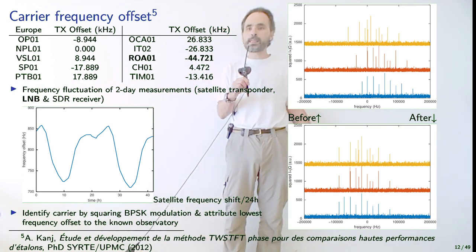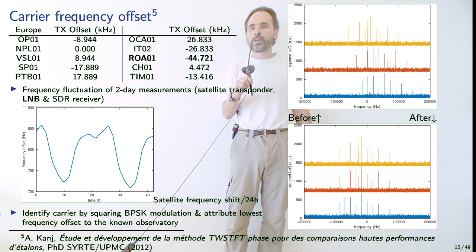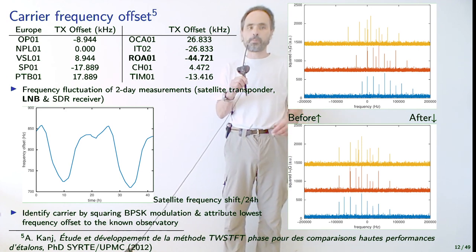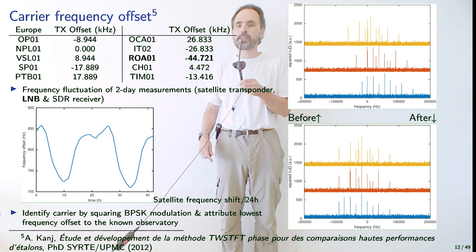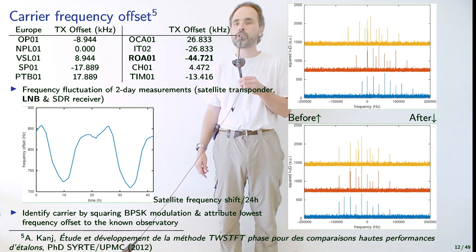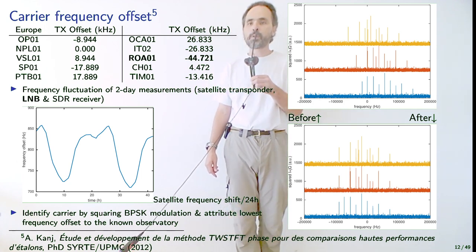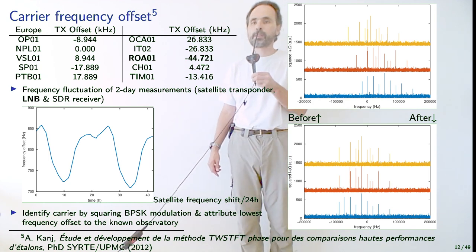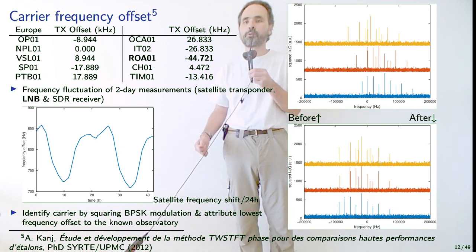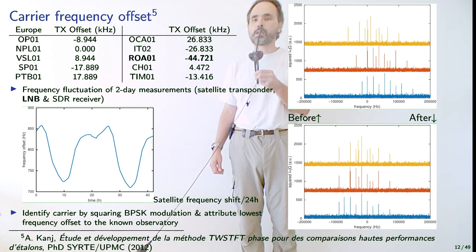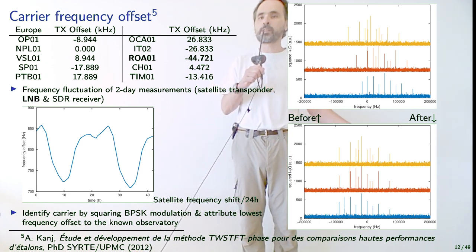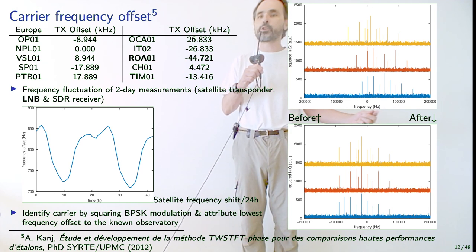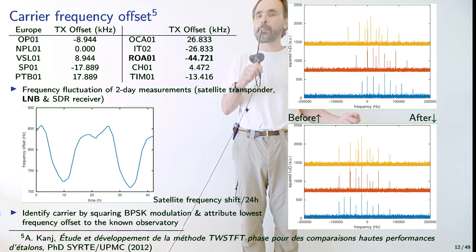Once we've received the first signal on the carrier, from the publicly available literature we know each laboratory broadcasts with a slight frequency offset in addition to BPSK. The first thing to determine is the frequency of the received signal. As usual with RF communication, we need to compensate for frequency offset. For BPSK, squaring the signal removes the spectrum spreading introduced by the phase modulation and collapses all the energy into the carrier.